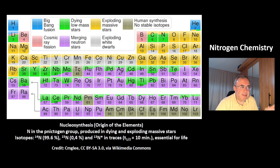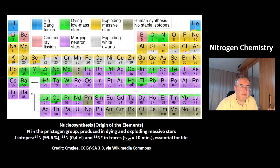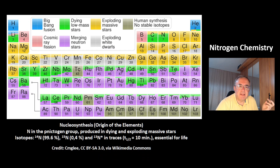There are three isotopes. The main isotope is Nitrogen-14 with 99.6%. Then there is Nitrogen-15 with 0.4%. And there are traces of the radioactive isotope Nitrogen-13, which has a half-life of 10 minutes.